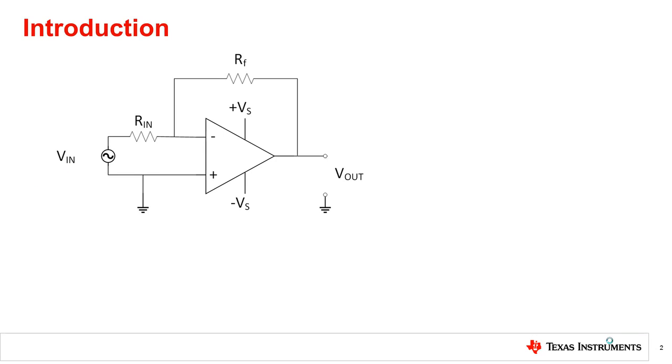Typically, compensation means to mitigate the effect of one or more variable parameters on the behavior of a system. As an example, let us take a small signal inverting amplifier.